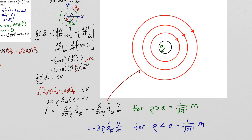In example 2, we are going to surround the solenoid with a conducting ring and see what happens.